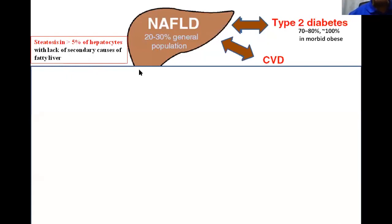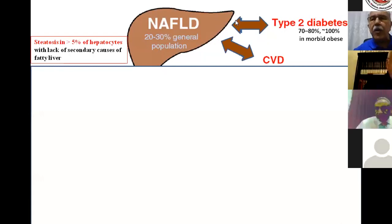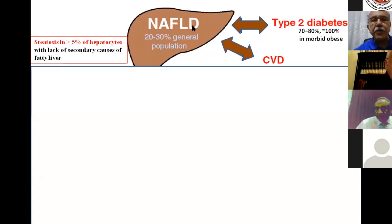The prevalence globally is very high — about 20 to 30% in the general population. Non-alcoholic fatty liver disease is considered the hepatic component of the metabolic syndrome, and it has a relation to all components of the metabolic syndrome. Most importantly, its relation to type 2 diabetes, where it is present in about 70 to 80% of diabetic patients, and in morbid obese patients it is more or less 100%.